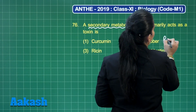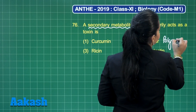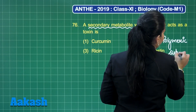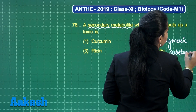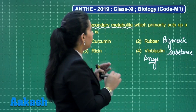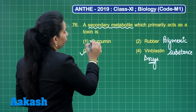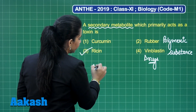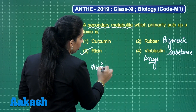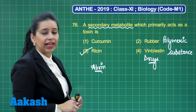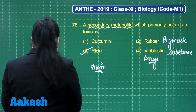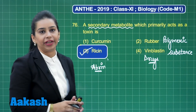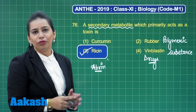Rubber is a polymeric substance. Ricin is the correct option which acts as a toxin. Along with ricin, there is one more secondary metabolite that also acts as a toxin, and that is abrin. So the correct option is option number 3.